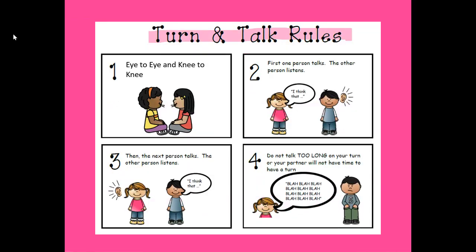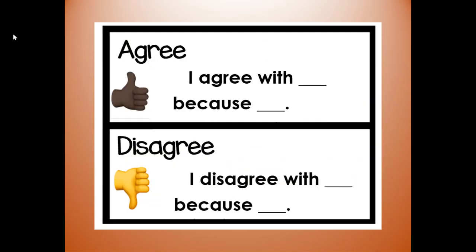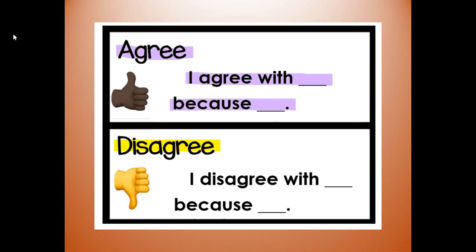Turn and talk rules. If you have a partner at home, make sure you're eye to eye and knee to knee — you're looking at the partner. Number two: first one person talks, the other person listens. Number three: then the next person talks, the other person listens. Number four: don't talk too long on your turn or your partner will not have time to have a turn. For each group of pictures, I'm going to ask: what do you notice or see? Answer out loud — I notice or I see. Then I'll ask how are they all the same or similar, and you'll say they all... You may agree and say I agree with you because, or disagree respectfully: I disagree with you because.